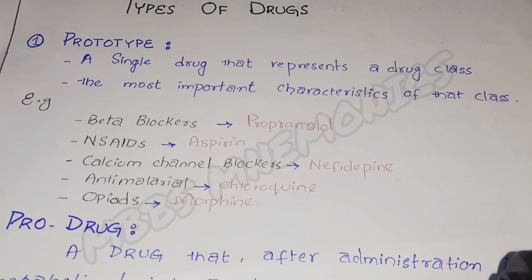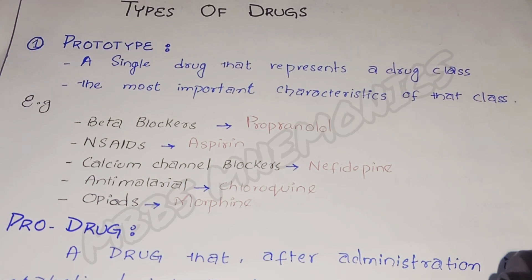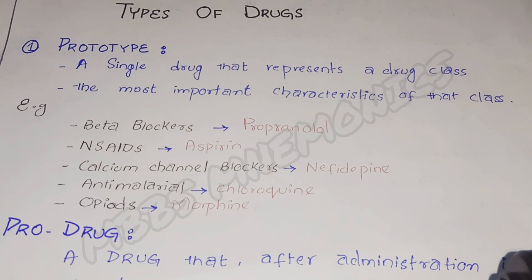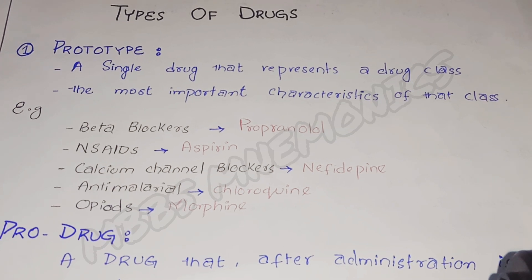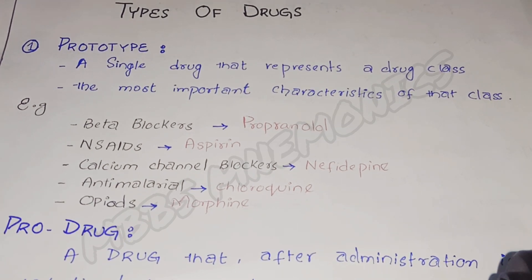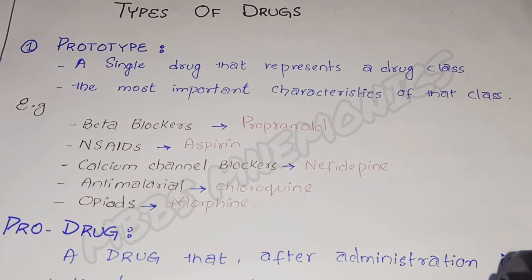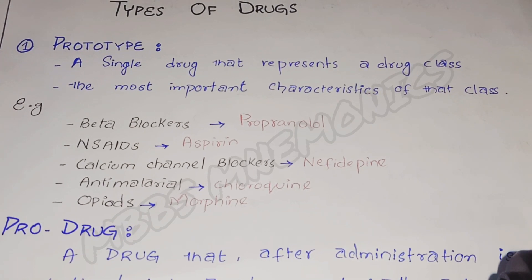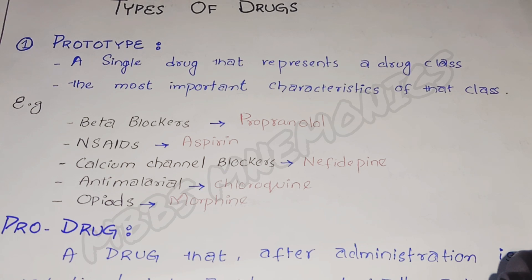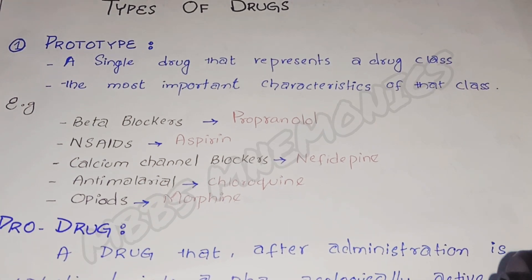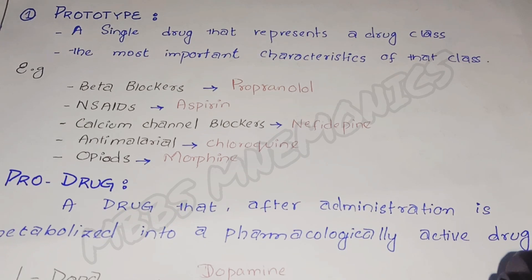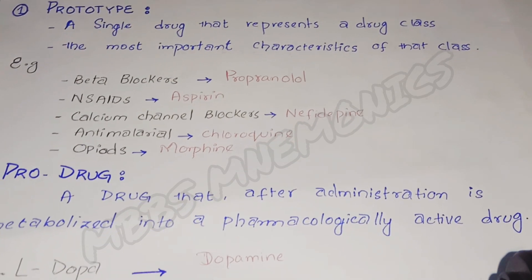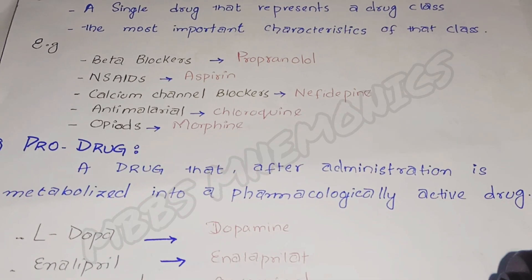Then we have the calcium channel blockers — another group of drugs — and nifedipine is one of them. By learning about nifedipine, it shows all the important characteristics of that class. Similarly, chloroquine is an anti-malarial drug that shows the properties of all anti-malarial drugs. Then we have morphine, which shows all the properties of the opioids class. So these are prototype drugs because they represent the properties of their class or group.